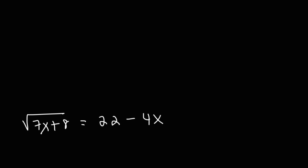Now to get rid of the second radical, we need to square both sides again. So we're going to have 7x plus 8 on the left side. On the right side, let's expand this expression. This is 22 minus 4x times itself.